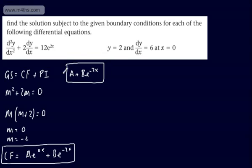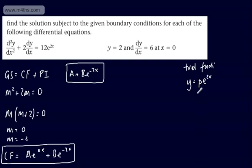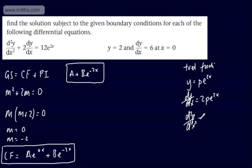For the general solution, what we need to do now is find the particular integral. Since we've got the form ke^(2x) on the right-hand side, our trial function will be y = pe^(2x), where p is just a constant — remember, this is lowercase p rather than capital P. Then dy/dx = 2pe^(2x), and d²y/dx² = 4pe^(2x).